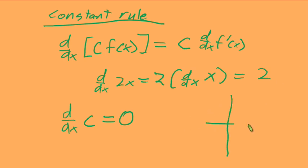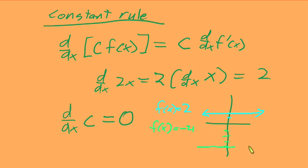Let's look at why this is graphically. If we plot f of x equals 2, what's the slope on that? It doesn't have any rise over run — that's 0. And if we find f of x equals negative 4, again it has no slope. So the derivative of a constant will always be 0.